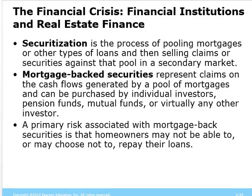Banks realized they weren't on the hook if borrowers defaulted because they were selling the mortgage right after creating it. So it was in their best interest to write mortgages for as many people as possible — people with no jobs, no credit history, bad FICO scores — in some cases people's pets got mortgages. They created crazy mortgages with zero-percent interest or reduced costs for the first three years, then re-evaluated where payments could jump from $3,000 to $5,000 a month, as specified in the fine print.